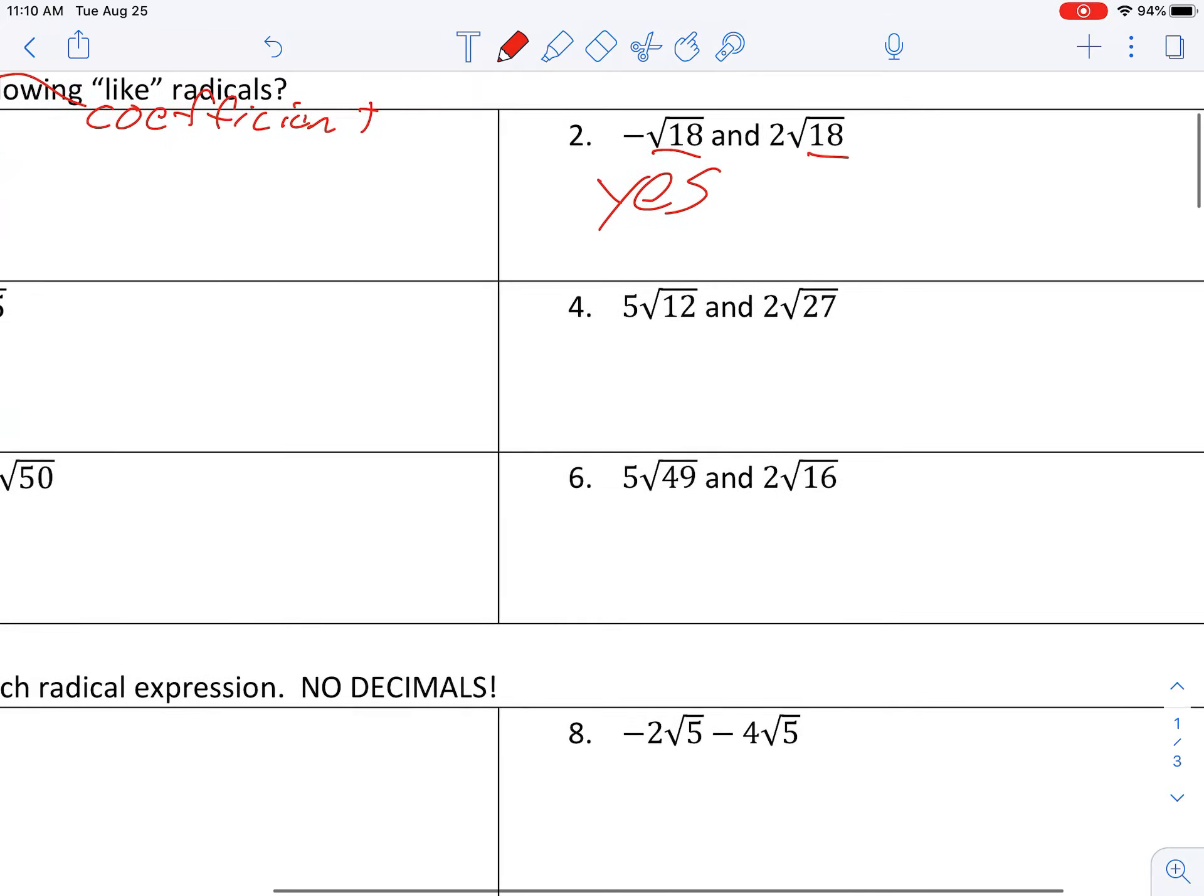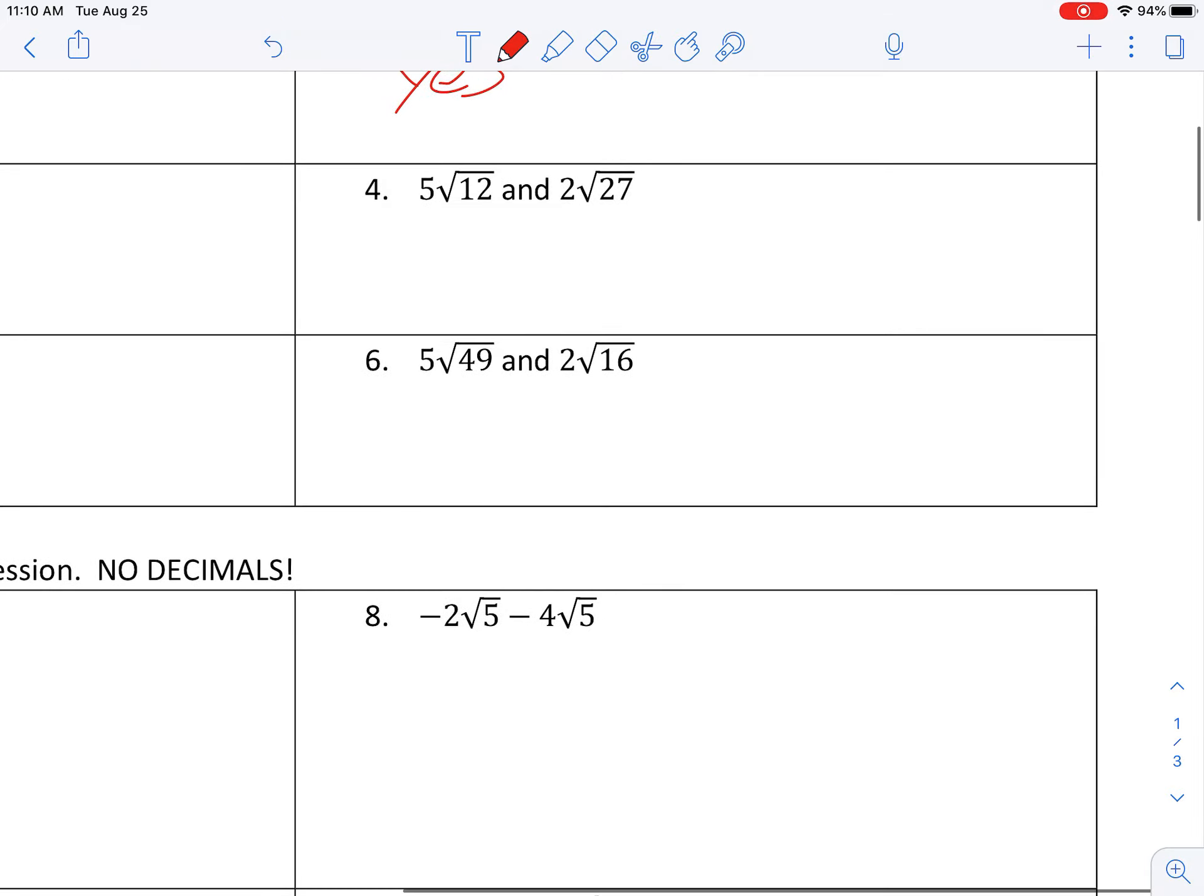Okay. Usually by this point, things are looking pretty good. So let's look at example four. Five root 12 and two root 27. Yes or no? And most people go ahead and say no. And then there's always a few people that say, nope, you're wrong. And that would be correct. These are actually like radicals. Now, do they look like it? No. But this brings back in our very first day of simplifying radicals.